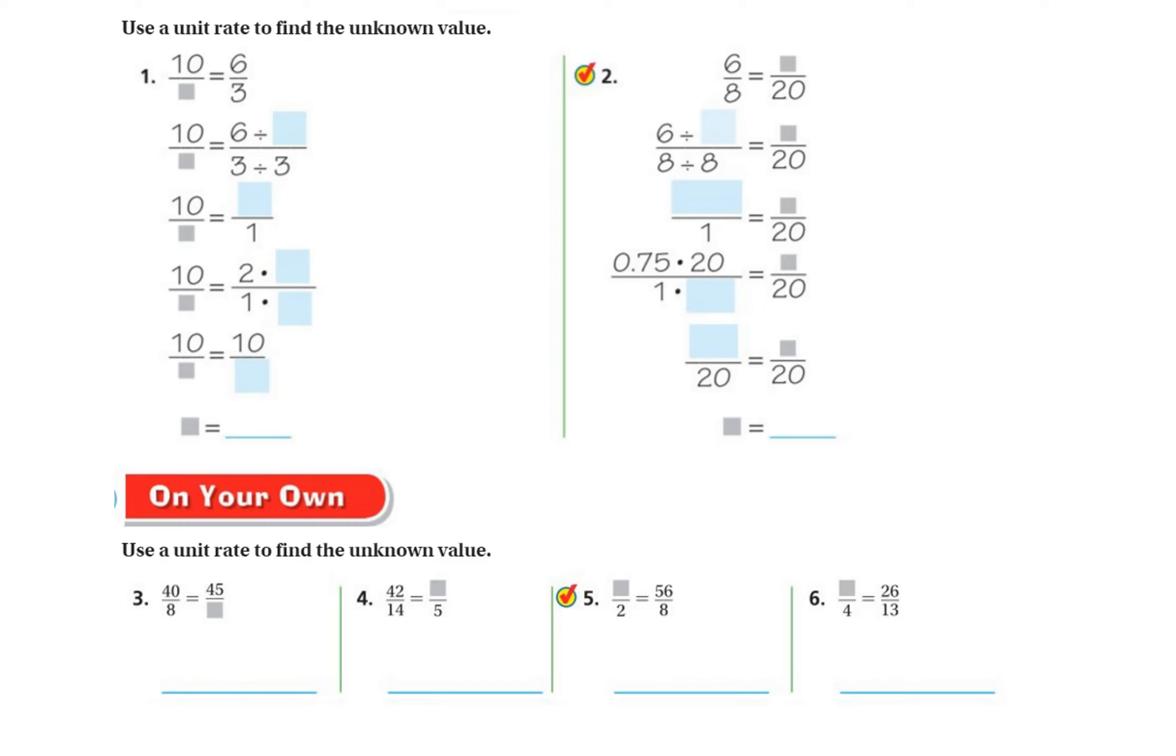Right now, I'm on page 181 in the GoMath textbook. Pay close attention to how I solve these because these are set up just the way your problems on your homework are set up. So number one, we focus on the one that we have both numbers for. That's the one I'm going to change to a unit rate.